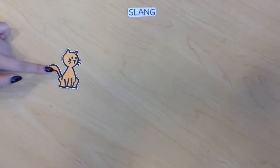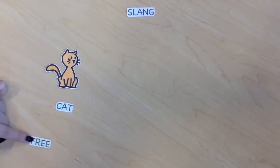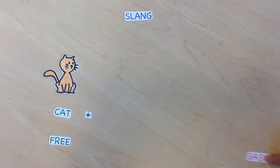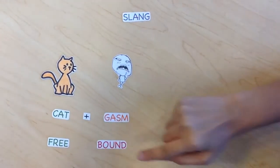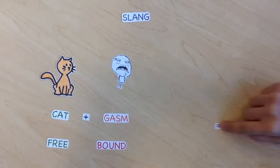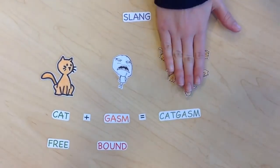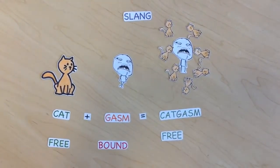Let's take the word 'cat' for example. This is a free morpheme. If we want to describe the orgasmic reaction one can have when surrounded by cats, we can add the bound morpheme '-gasm.' Thus, we end up with the word 'catgasm,' another free morpheme.